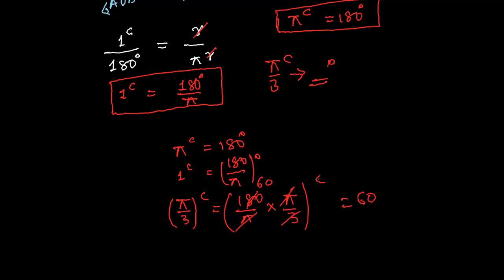So, we got 60 degrees. So, this is how we convert it. π by 3 radian means 60 degrees.